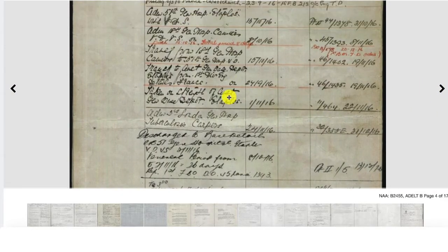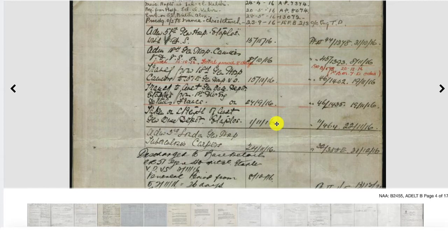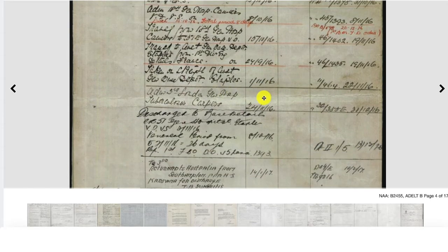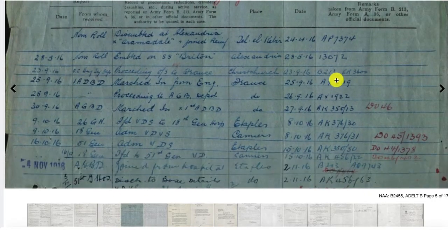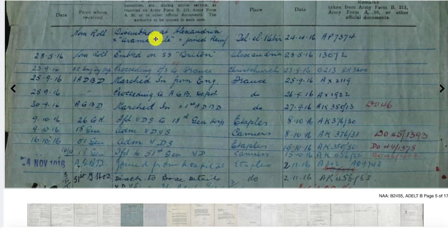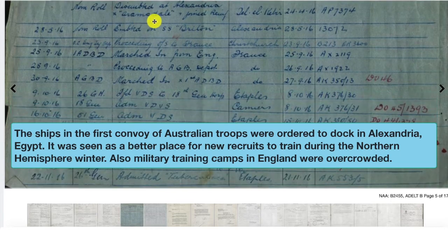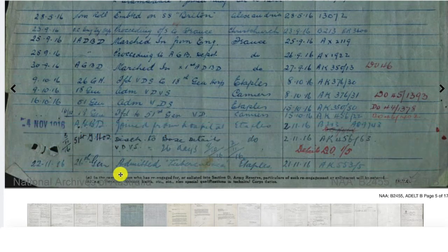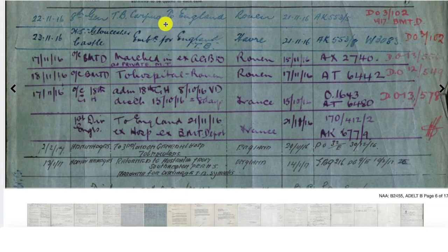It has information about his enlistment and his war service. Handwriting can be quite difficult to decipher, but there are usually typed records further along after the handwritten ones. Here we can see that Burton disembarked to Alexandria. When he arrived at the war, he was admitted with tuberculosis to the hospital on the 11th of November 1916. He went to England and was discharged in April 1917.